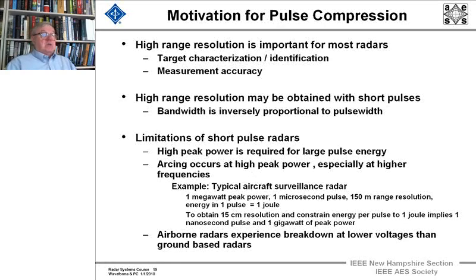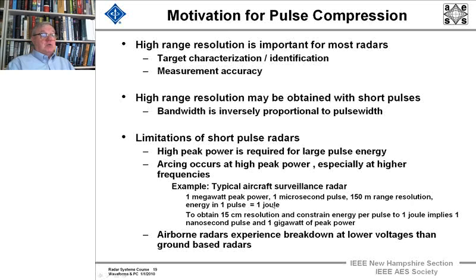High peak power is required for large pulse energy, and at high peak powers, arcing can often occur, especially at higher frequencies — especially in airborne radars. A typical airport surveillance radar has a megawatt of peak power, a one-microsecond pulse, and about a kilowatt of average power for 150-meter range resolution. The energy in one pulse is one joule. To obtain 15-centimeter resolution with the constraint of one joule per pulse implies a nanosecond pulse and a gigawatt of peak power — a very unreasonable expectation for an S-band radar.